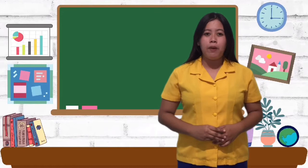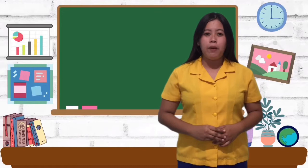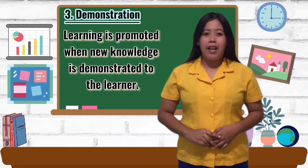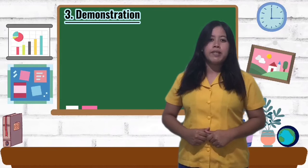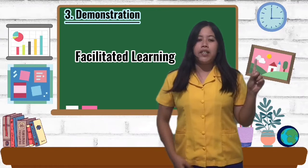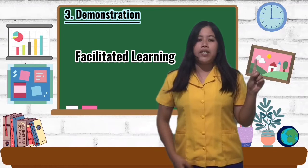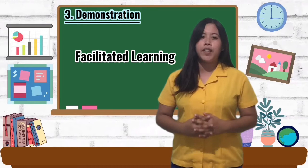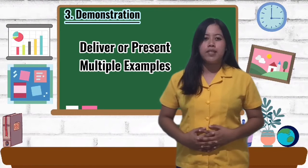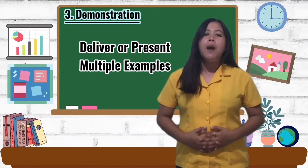The third principle of Merrill's Principles of Instruction is demonstration. Learning is promoted when new knowledge is demonstrated to the learner. Demonstration allows learners to identify areas of improvement. There are things to consider to be successful in the demonstration principle. First, facilitated learning — when learners are provided with appropriate guidance including directed relevant information, multiple presentations, and comparison of demonstrations. Learning is facilitated when the demonstration is consistent with the learning goal. Second, deliver multiple examples, as multiple examples allow learners to compare different perspectives.